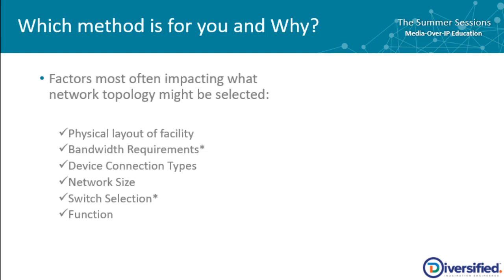Device connection types also play into this. If you have 1 gig devices, your spine switch may not support 1 gig interfaces; if you have 10, 25, 40, or 100 gig, you need to select your spine switch based on those interface types. Network size matters too: if you have a small event, such as at stadiums, spine-leaf architecture may not make sense because there's only a select number of devices. Versus if you're in a large facility, you may need to scale the network architecture out to support multiple functions.